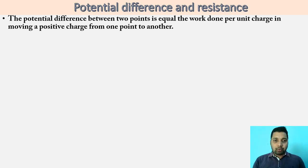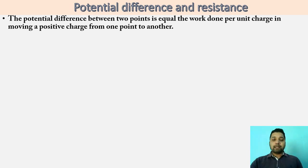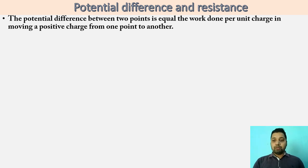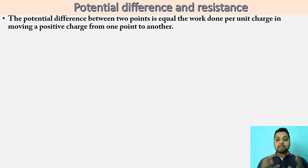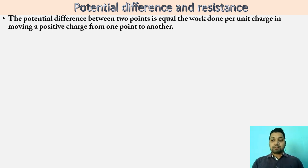The potential difference between any two points is the work done per charge between those two points. Whenever you see a battery, it is written 1.2 volt, 2.5 volt, 220 volt — that is the potential difference or the voltage of that particular battery or cell. A cell is a device that converts chemical energy to electrical energy. The mathematical expression is: potential difference V equal to W by Q, where W is the work done and Q is the charge.